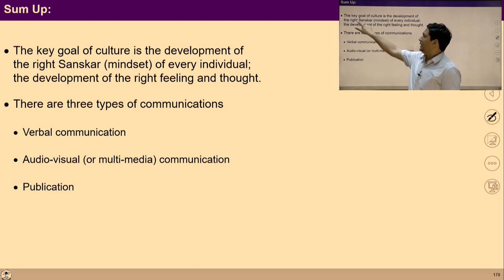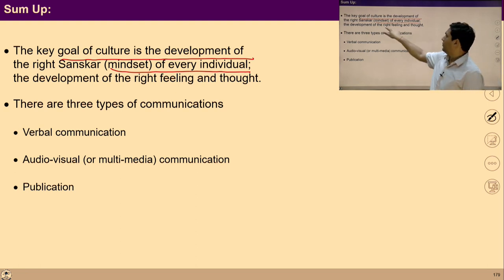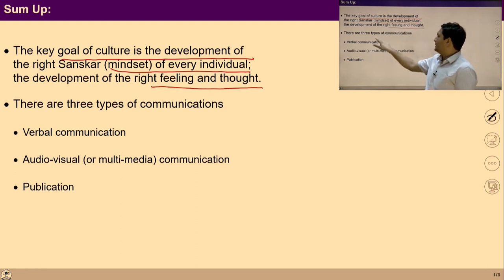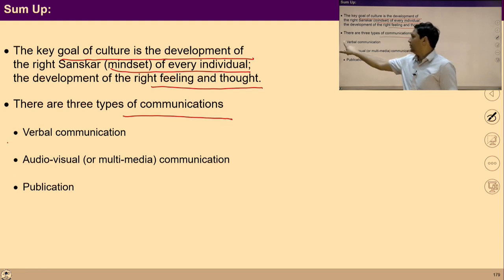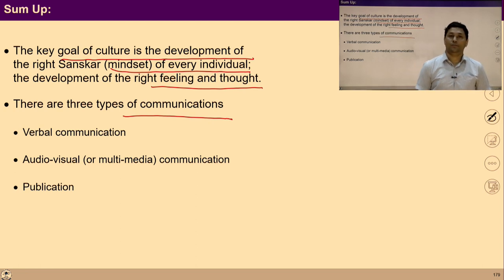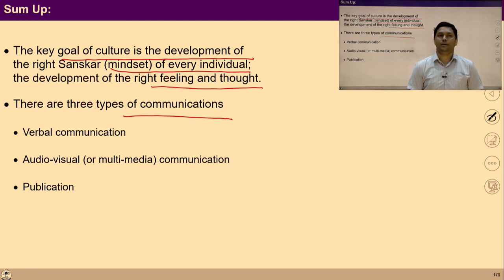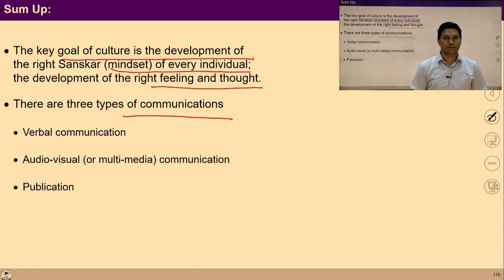To sum up the whole lecture: the key goal of culture is the development of right sanskar of every individual and the development of right feelings. There are three types of communication — verbal, audio-visual, and publication — that are used to convey feelings and thoughts in any culture to every individual. That is all for today's lecture. In the next lecture, we will talk about civilization. Thank you very much.